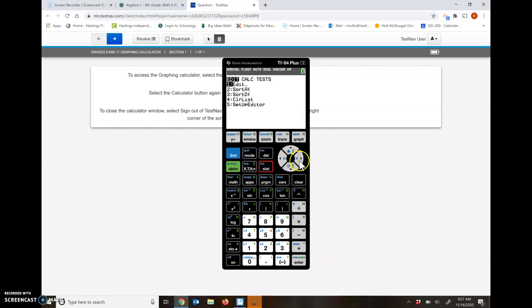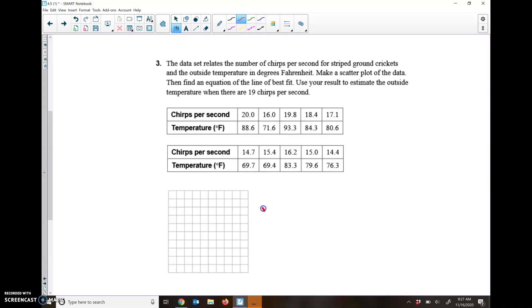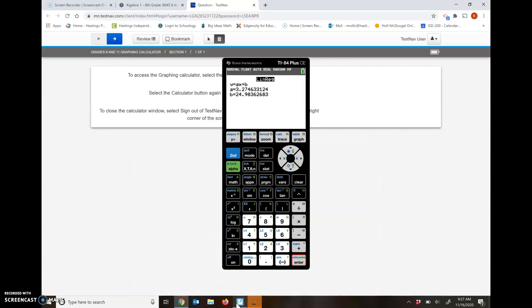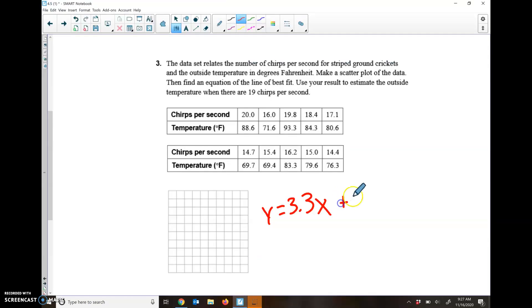We're going to hit the stat button again, slide over to calc, and then go down to linear regression. Yes, my Xs are my L1s, my Ys are my L2s. I want them to calculate, and we get 3.27 as my slope. Let's round that to 3.3. So Y equals 3.3X, and then plus about 24.9. Let's just say plus 25 there.